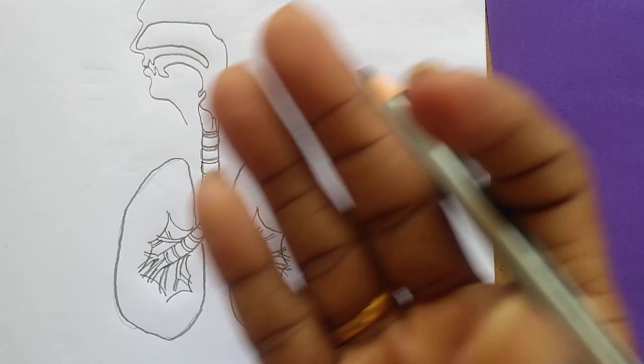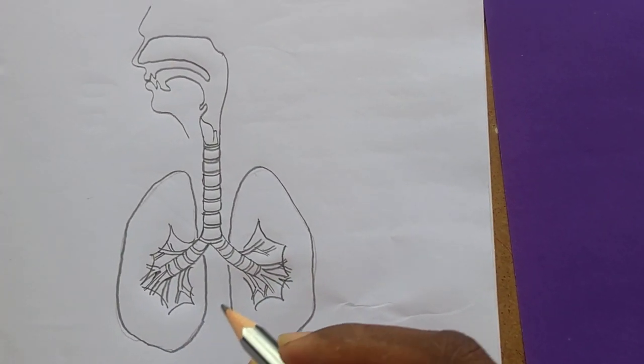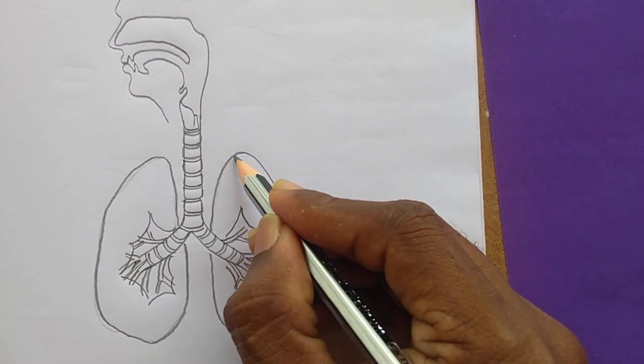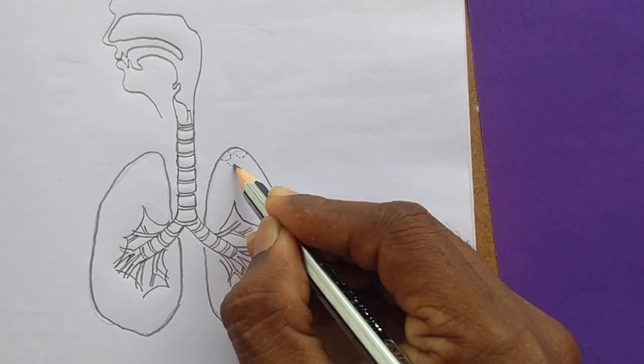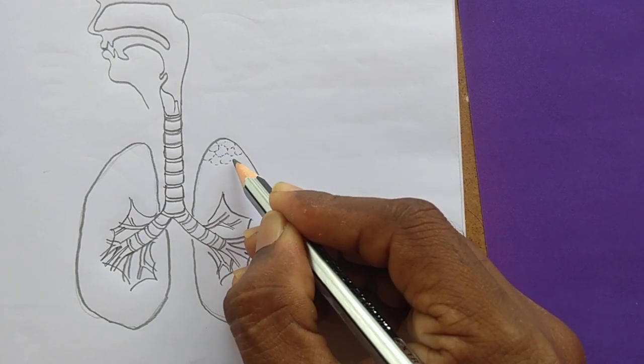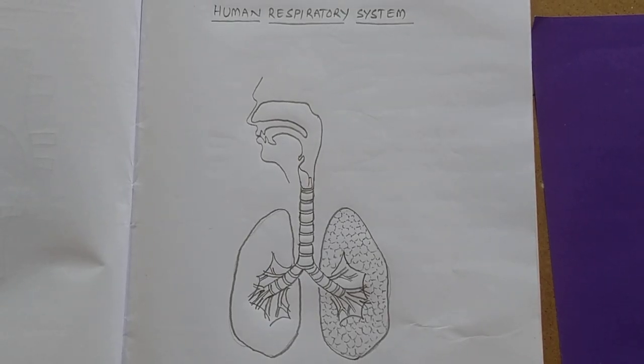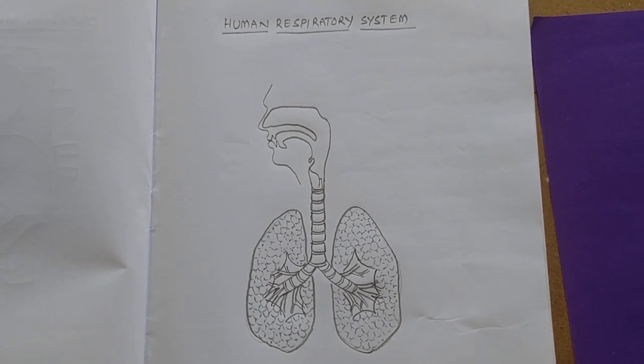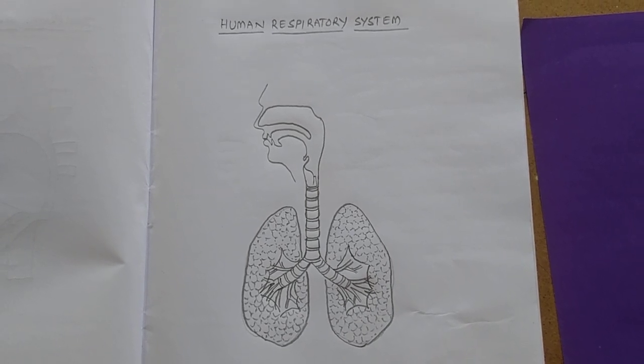While we are observing that internal area of the lungs, we can observe like that. And we have to draw small alveoli over the lungs like this. We have to fill the lungs with alveoli. Okay, now we have to go for labeling.